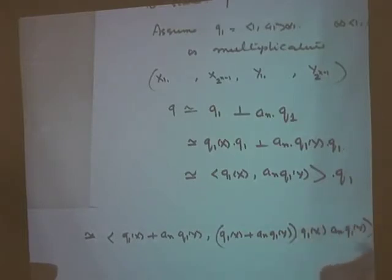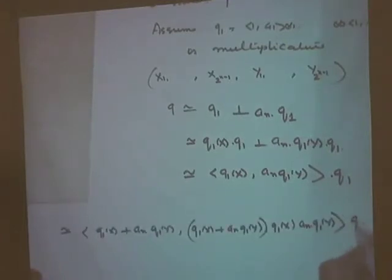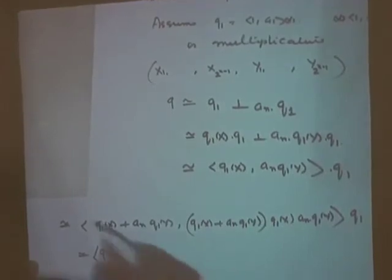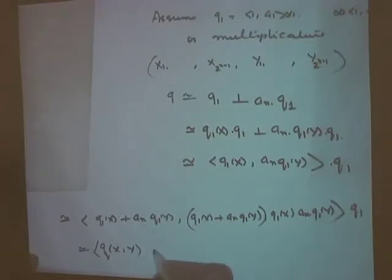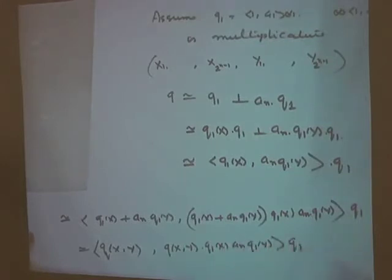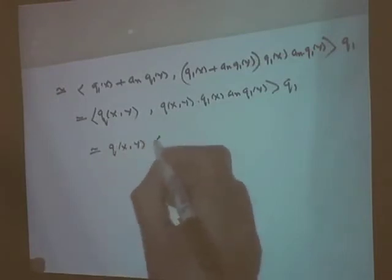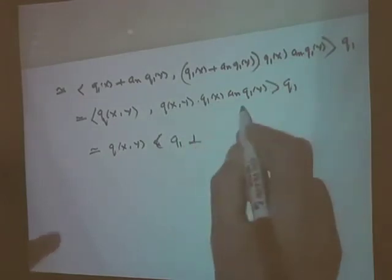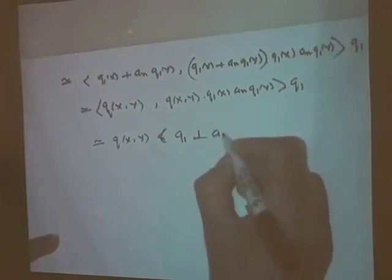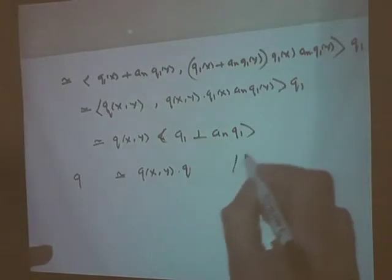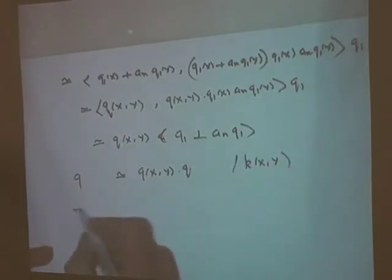The binary form ⟨q₁(x), aₙ·q₁(y)⟩ represents q₁(x) + aₙ·q₁(y), and the other slot is determined by the determinant, so the form equals ⟨q₁(x) + aₙ·q₁(y), q₁(x)·aₙ·q₁(y)⟩. But q₁(x) + aₙ·q₁(y) is simply q(x,y), the value of q at the generic point (x,y). We can factor out q(x,y), and then q₁(x)·q₁ = q₁ and q₁(y)·q₁ = q₁ by multiplicativity, giving q ≅ q(x,y)·q over k(x,y). By Criterion 1, q is multiplicative.